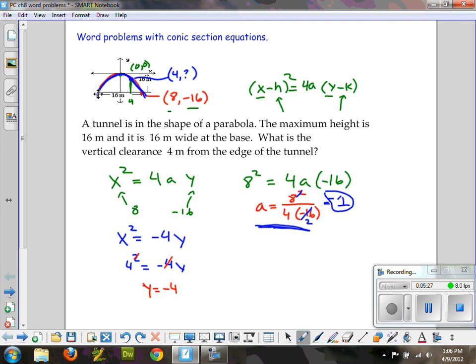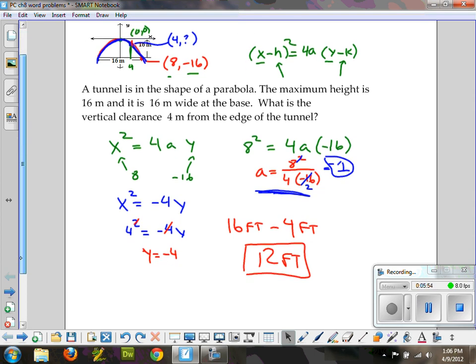We went 4 over and down 4. That means if the total height was 16 feet from the middle, and that location is down 4, that leaves 16 minus 4 feet. It leaves 12 feet of clearance at that point. Okay, let's try another one.